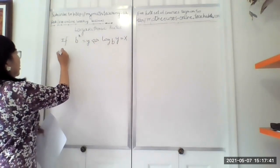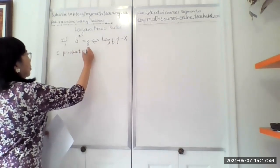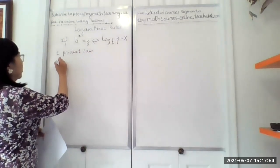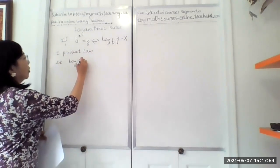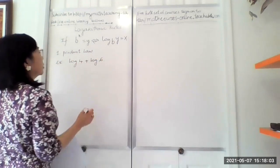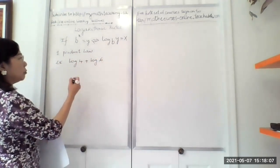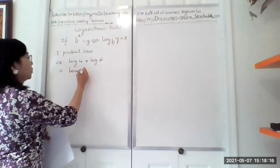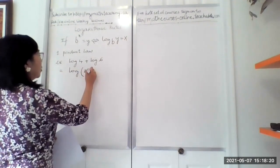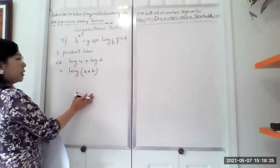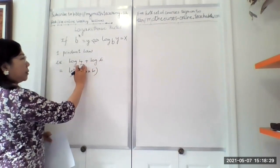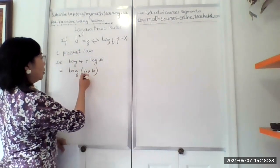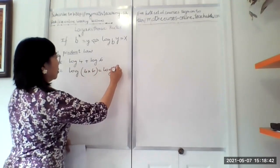Now let's talk about the first law, which we call the product law. The product law says that if you have, for example, log of 4 adding with log of 6, you can rewrite it by combining these two into one log and multiplying them together: log of 4 times 6. You don't need two separate logs — you can join them in one log. Instead of adding, now you multiply. That's why we call it the product law — product means multiply. So log of 4 times 6 equals log of 24.